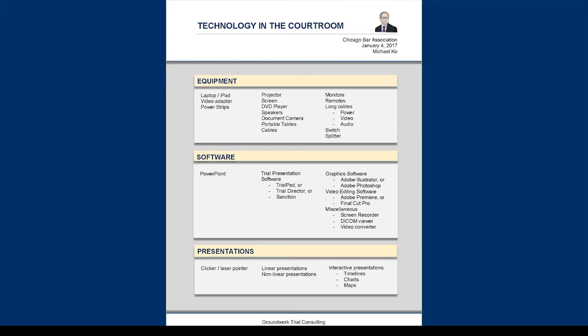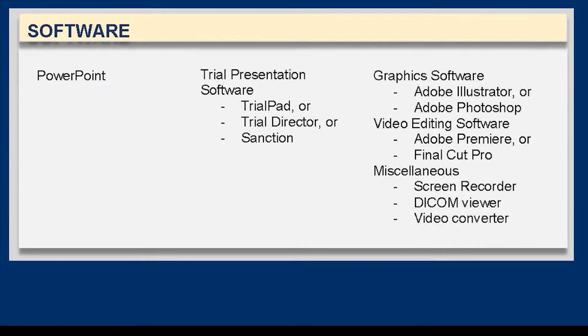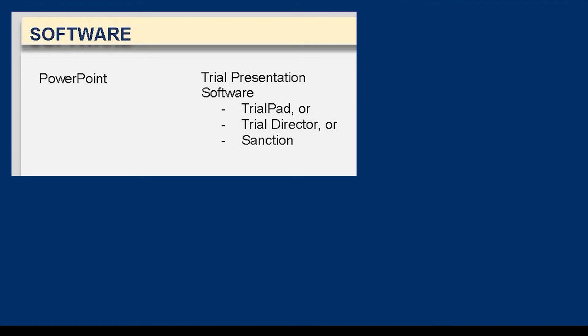The second block of material I talked about at that CLE was software — software that you could use in a courtroom. Here's an image of the handout. On my next click, I brought out just the software portion of that document using a morph transition. Then on the next slide, I clicked again and used another morph transition to talk about just PowerPoint and other trial presentation software.